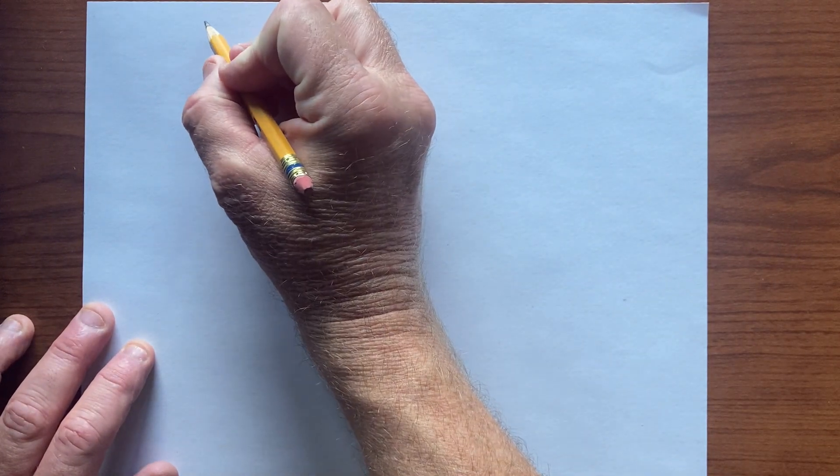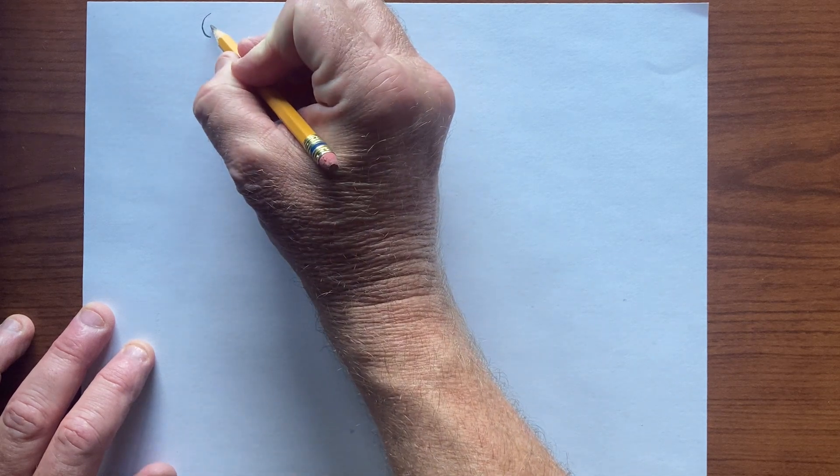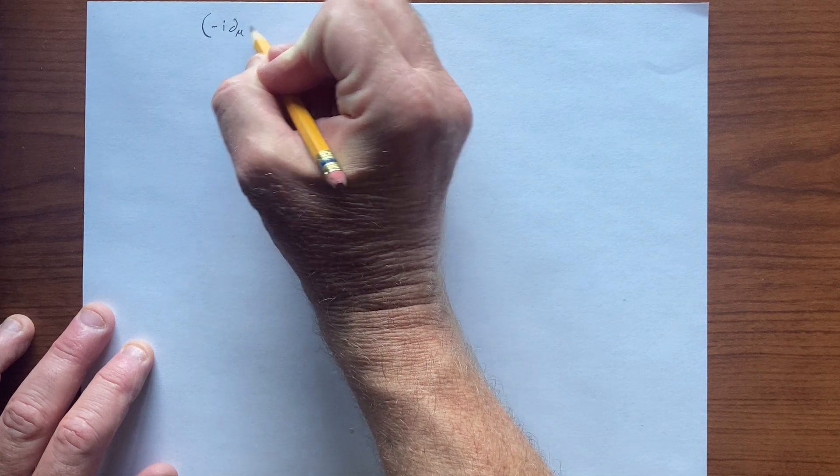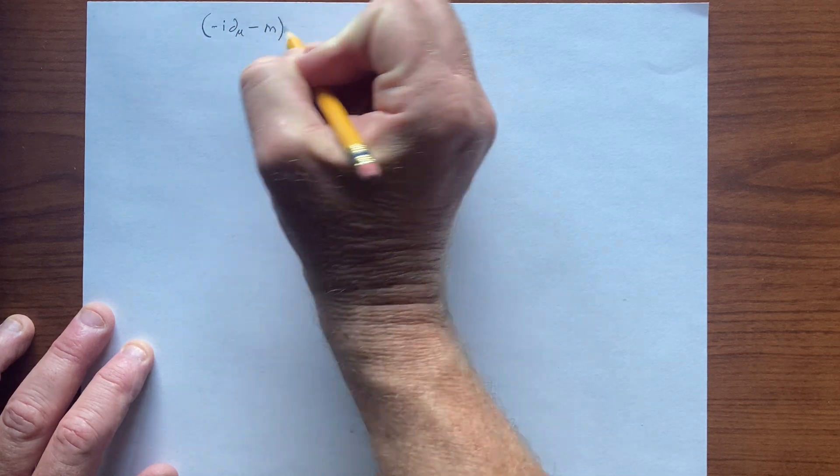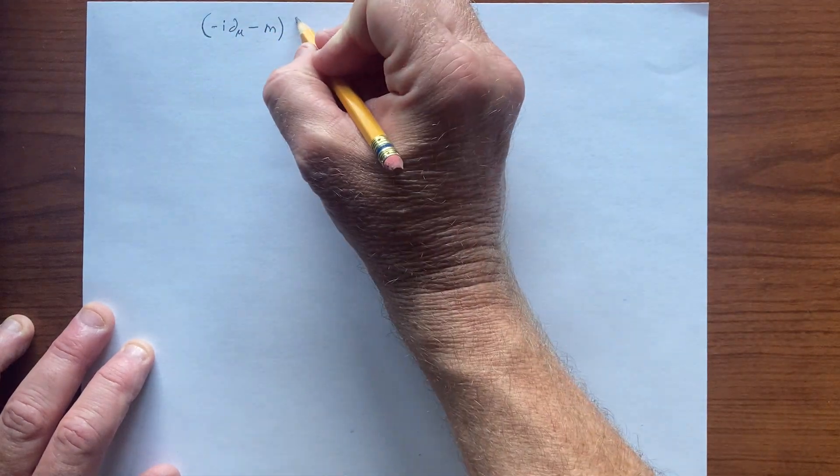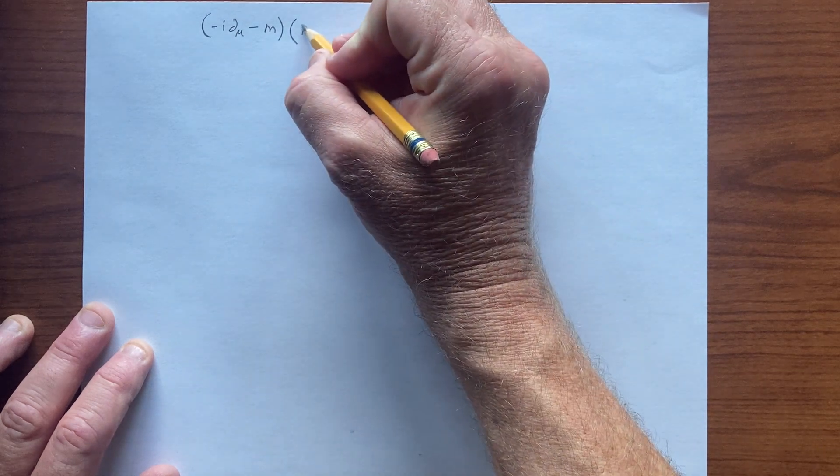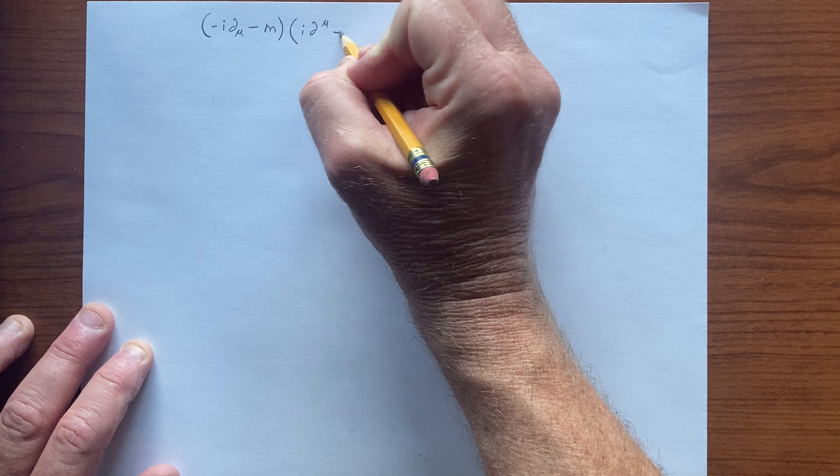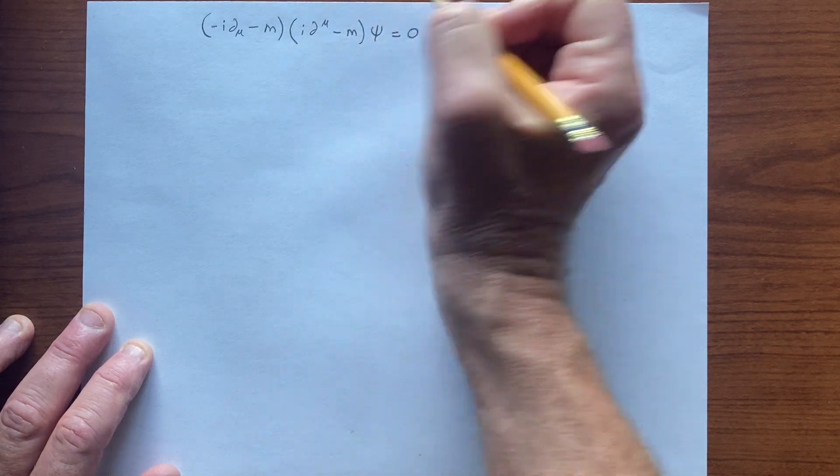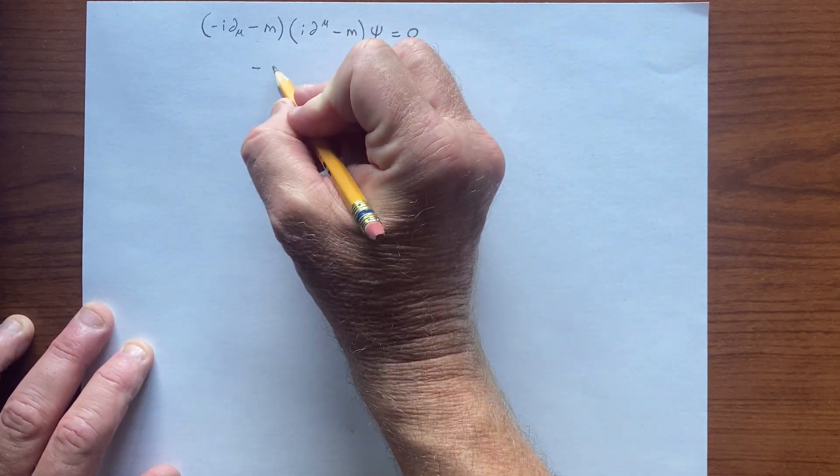So in the previous video we tried to break up the Klein-Gordon equation so that we could have essentially the square root of the equation, which we then square and we get the Klein-Gordon equation.